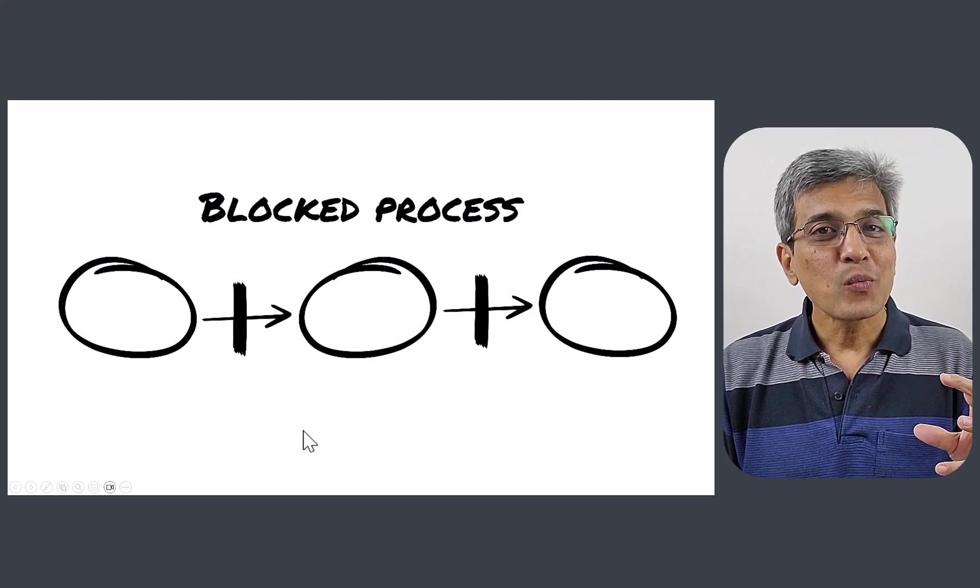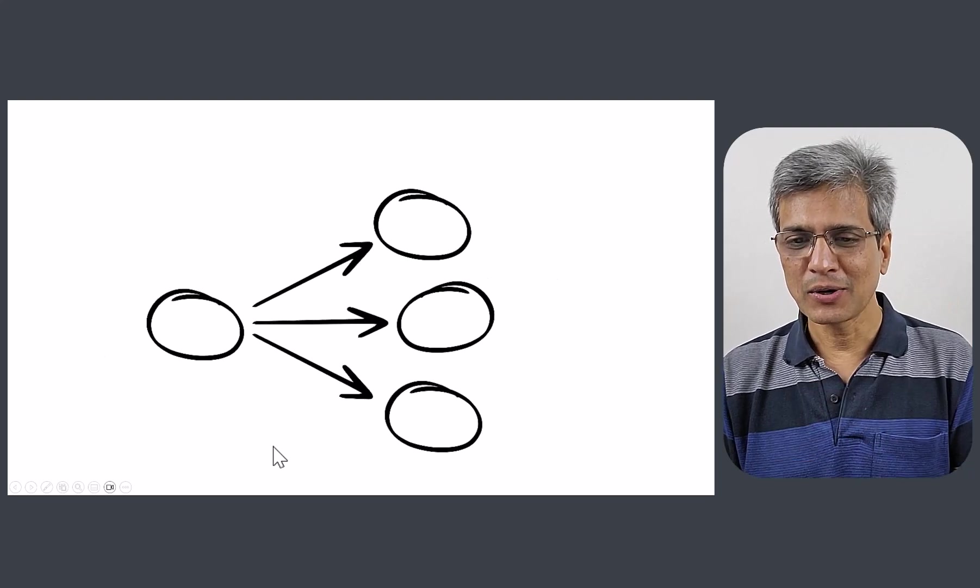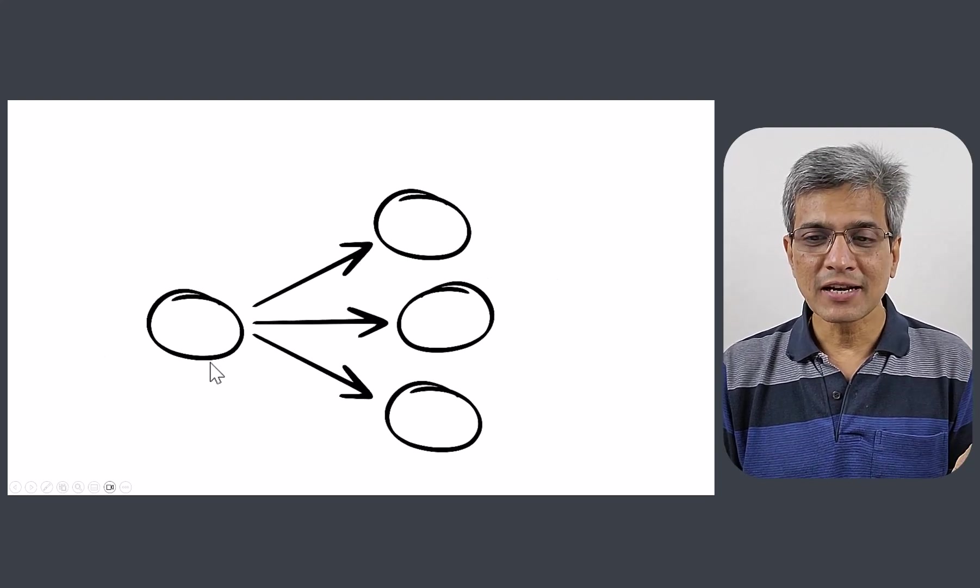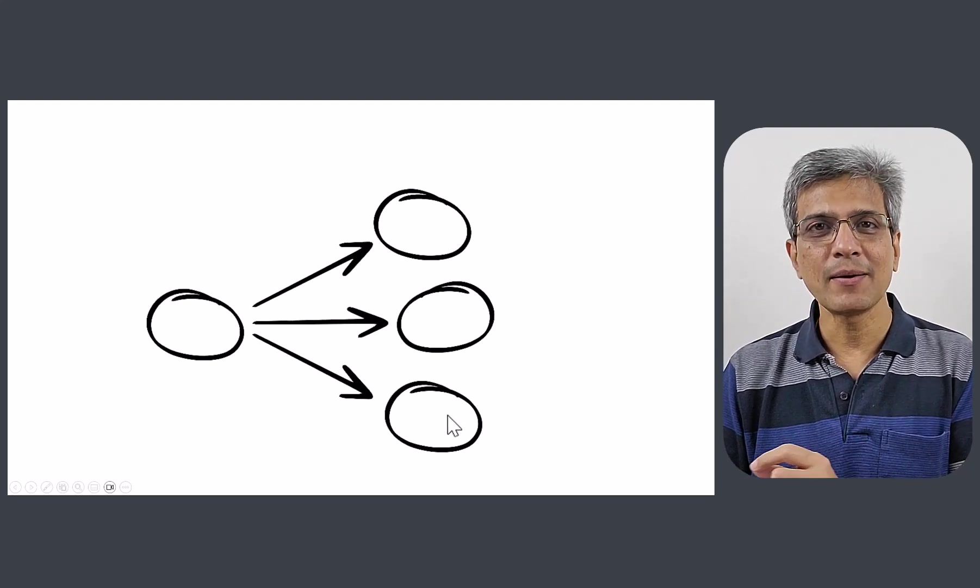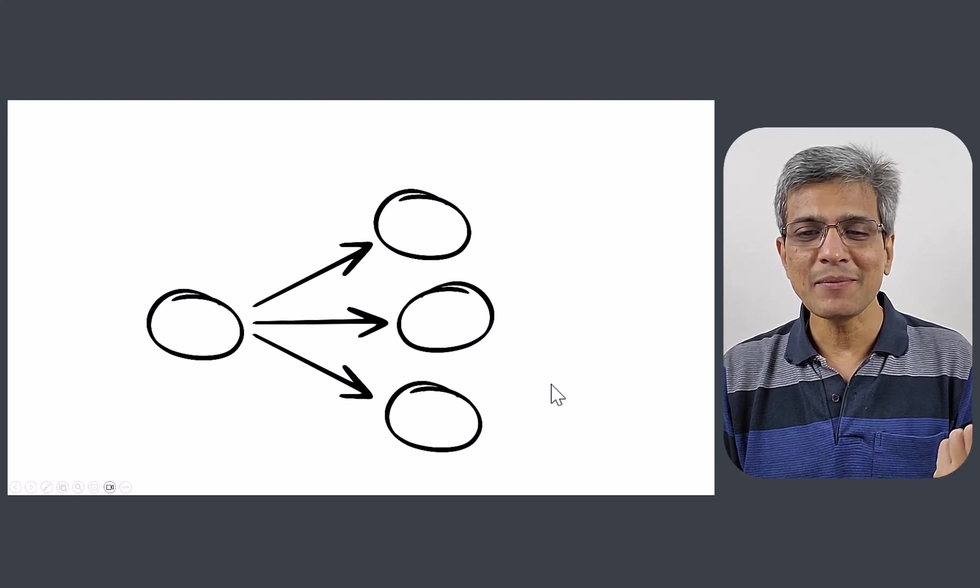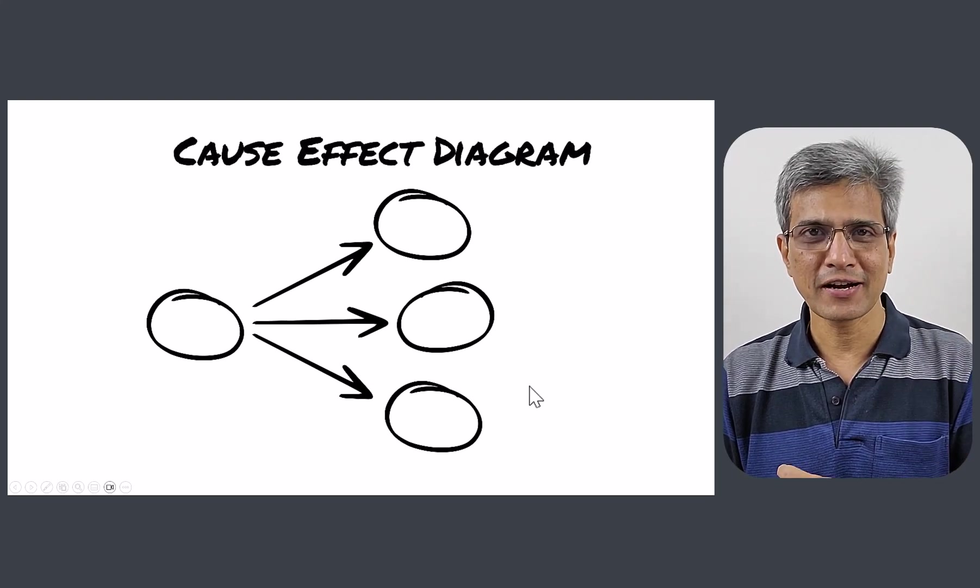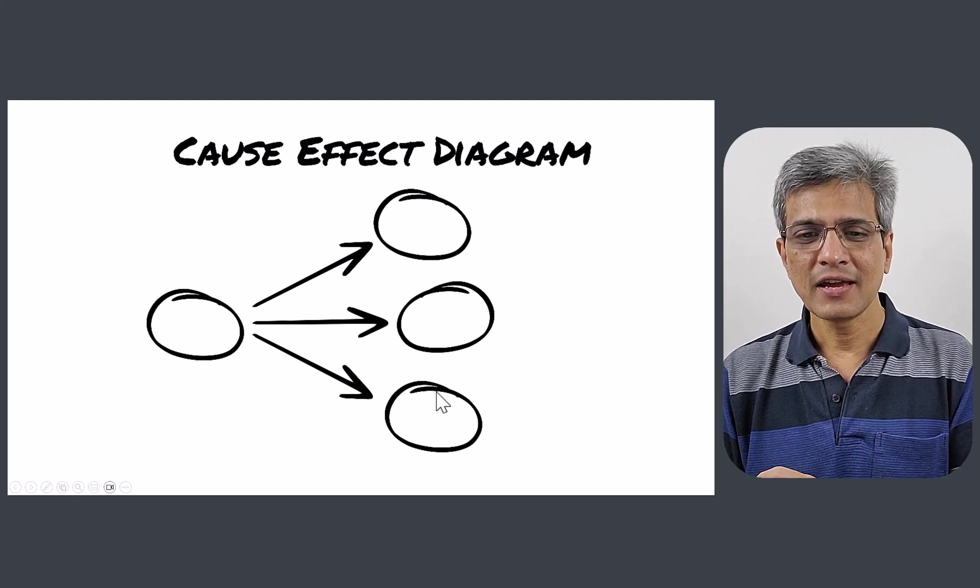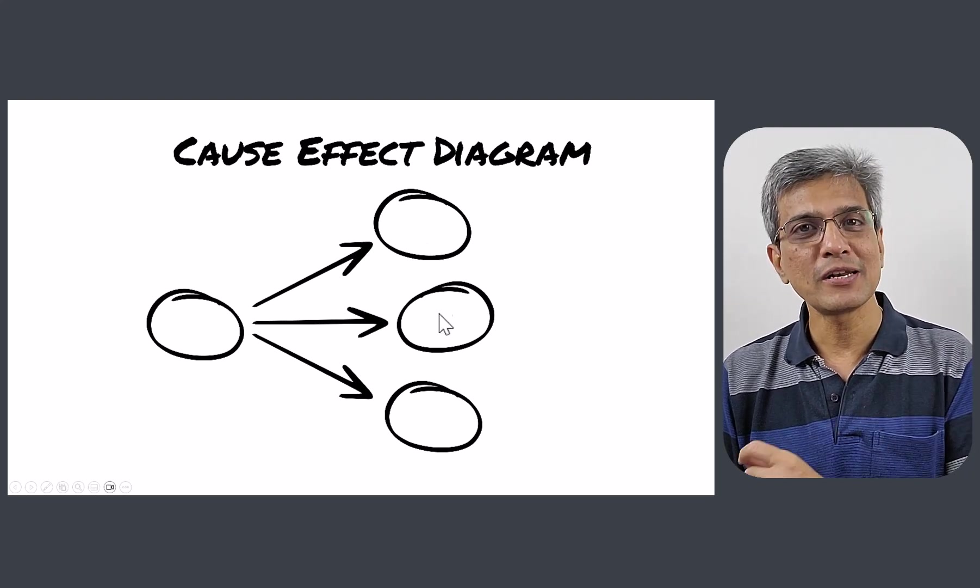Now, let us play with the positioning of the various circles. Take a look at this. We have one circle here and we have three circles emanating from it, which automatically makes it a simple cause-effect diagram. One cause, three results. It could be one idea leading to multiple ideas.